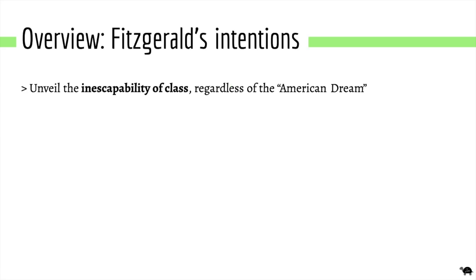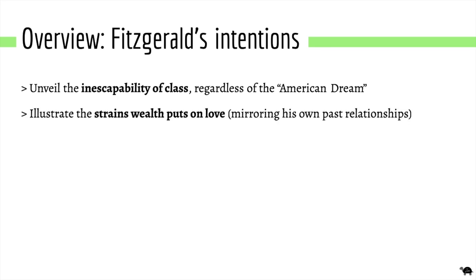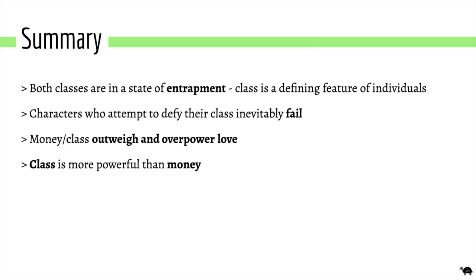When it comes to the author's intentions, Fitzgerald is unveiling the inescapability of class regardless of the American dream — even if people make it and gain a lot of money, they are still limited by their class. He also looks at the strain wealth puts on love, mirroring his own experiences, and passes judgment on decadence and the upper class. The novel looks at a sense of entrapment in both classes: the lower class are trapped physically in places like the Valley of Ashes, while the upper class are trapped more metaphorically by society and by themselves. Money and class outweigh love, and class is more powerful than money.